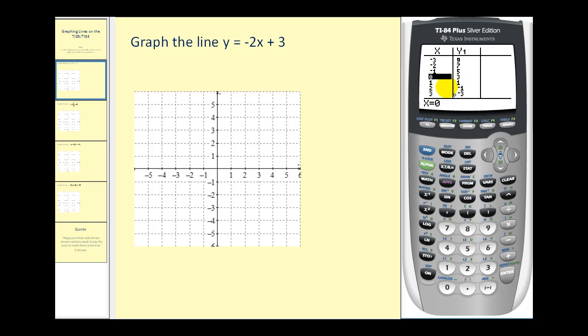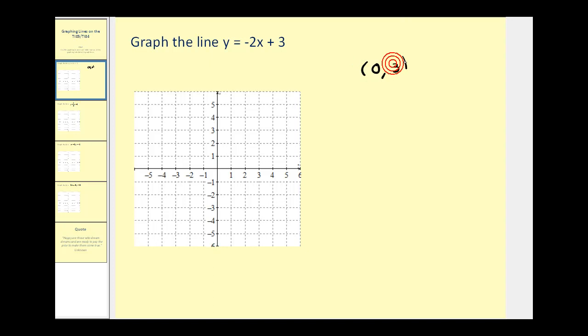We only need two of these points to make a nice accurate graph of this line. So let's go ahead and plot zero three and three, negative three. So here's the point zero three, and here's the point three, negative three. So our line passes through those two points.